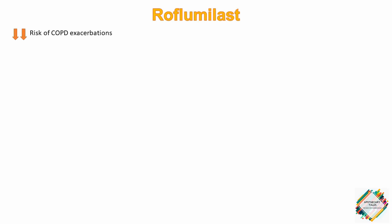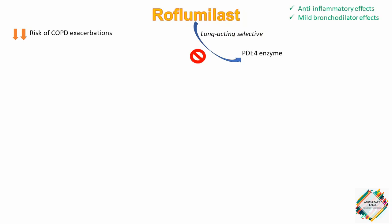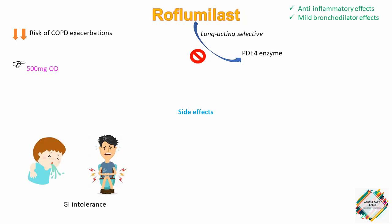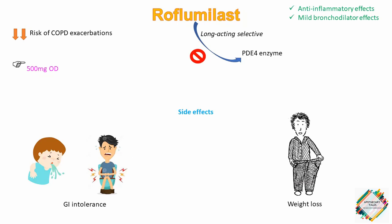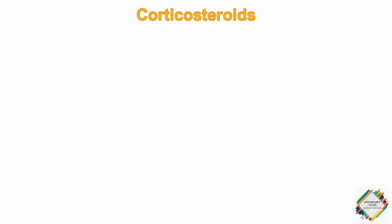Roflumilast is indicated to reduce the risk of COPD exacerbations in patients with severe COPD associated with chronic bronchitis. It is a long-acting selective PDE4 inhibitor that provides anti-inflammatory effects and mild bronchodilator effects. The dose of roflumilast is 500 micrograms once daily with or without food. The primary side effects are GI intolerance such as diarrhea and nausea, and weight loss averaging about 5 pounds was seen in clinical trials. Drug interactions through the CYP450 pathway may occur, analogous to those seen with theophyllin.